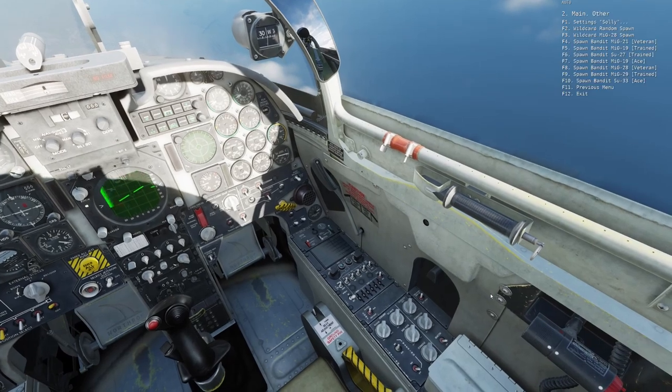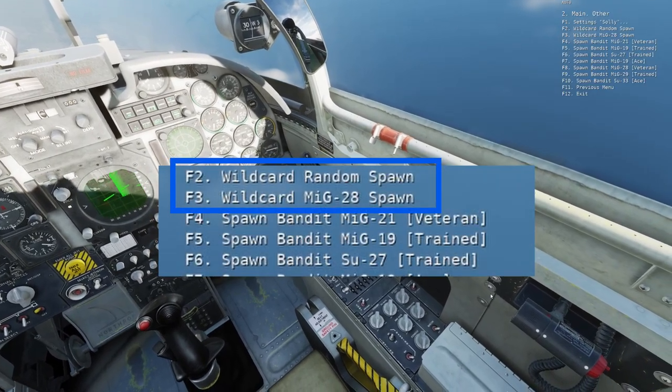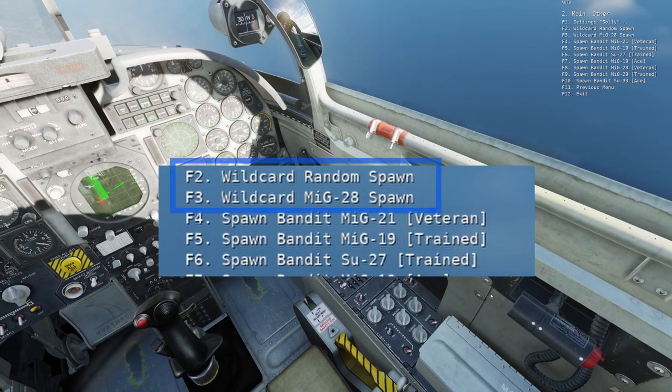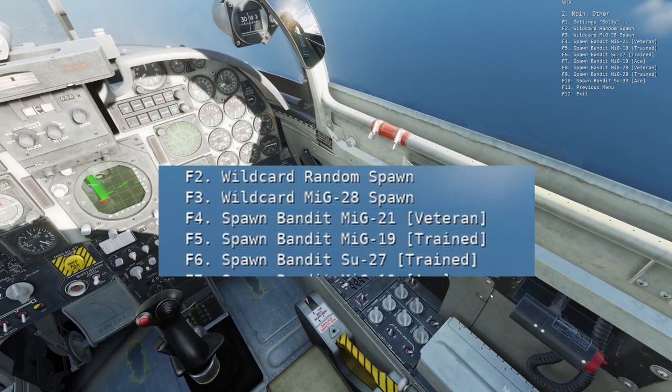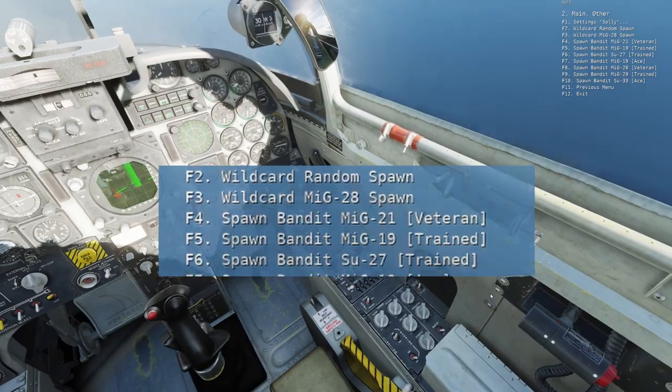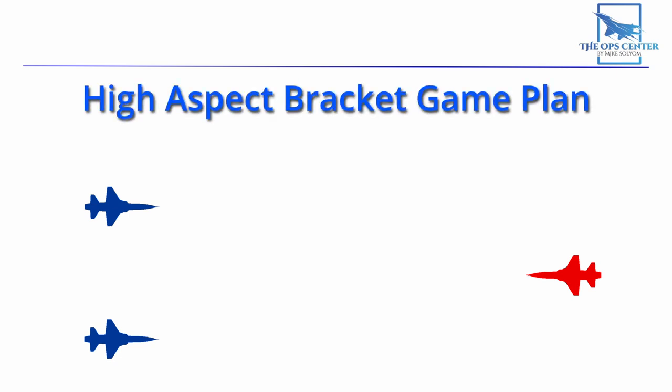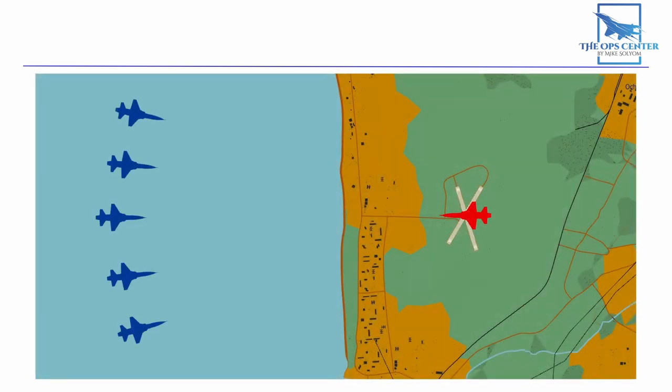You'll also see some options in the list for wild cards. Those are for an increased level of difficulty. We'll go over what they do in the next video. For now, we want to focus on tackling our spawned AI bogey and learning the basics of ACM communication. The scenario we covered is called a high aspect bracket game plan. So it works best if we approach the bogey from a high aspect. You'll want to spawn the bogey when your flight is in the bogey's forward arc. So anywhere out here over the ocean.